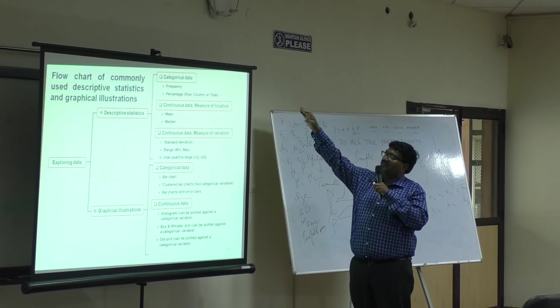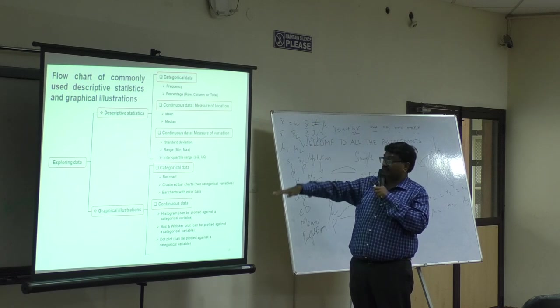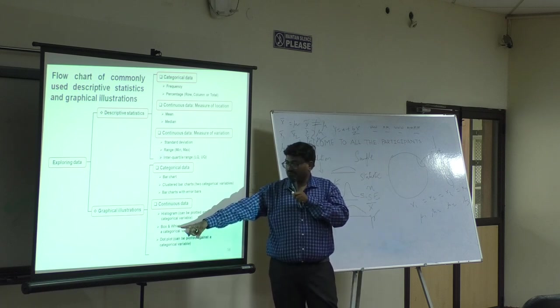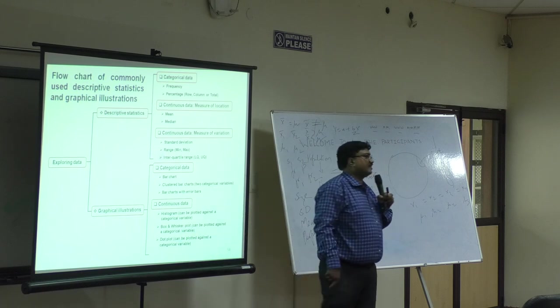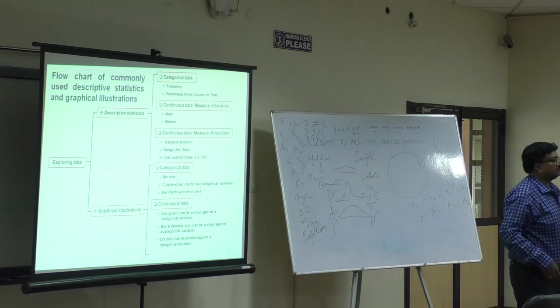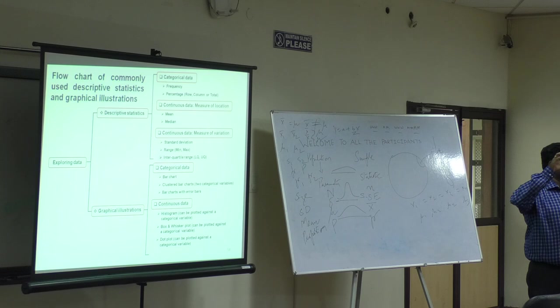Descriptive statistics—you have categorical data, continuous data. Then you talk about categorical and continuous. What kind of graphs? Yesterday I was talking about box plots. I think you answered me yesterday about what are the things you get in a box plot. It's a very nice way to describe descriptive statistics. Know when to use which kind of graphs.